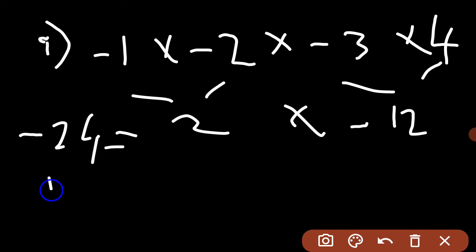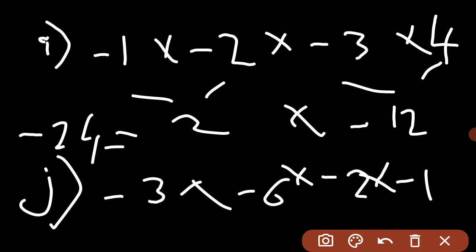Part J says negative 3 into negative 6 into negative 2 into negative 1. If you multiply them, you get 18 into 2. 18 into 2 equals 36. Since both numbers are positive, the answer will be positive.